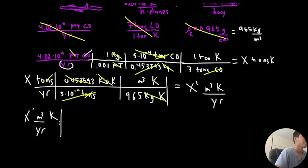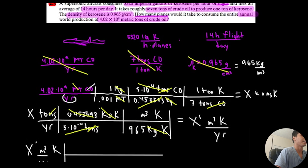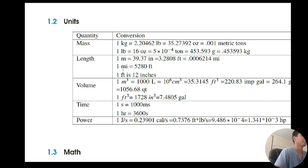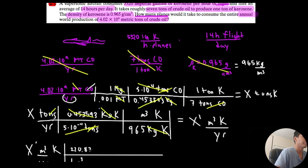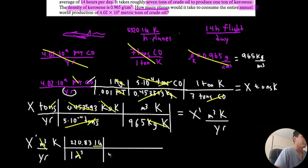We know the aircraft consumes 5,320 imperial gallons of kerosene per hour per plane. We currently have meters cubed, which is volume, so: 1 meter cubed equals 220.83 imperial gallons. Using that conversion — 220.83 imperial gallons per meter cubed — meters cubed cancels, and now we have imperial gallons. Now we can multiply this by the consumption conversion factor: 5,320 imperial gallons of kerosene per hour. Imperial gallons cancels out.